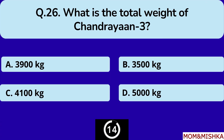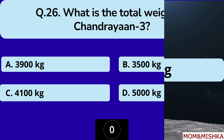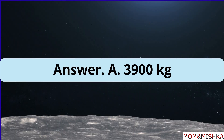What is the total weight of Chandrayaan-3? 3900 kg, option A.